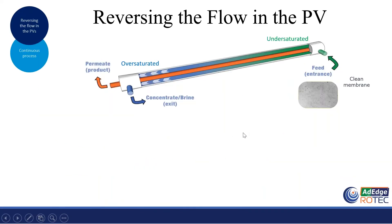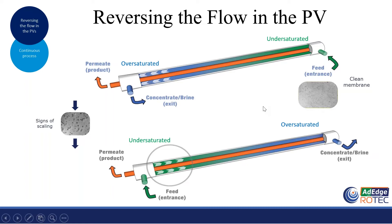In a conventional pressure vessel, feed water flows from right to left — from the green part to the blue part. Then, prior to the induction time — when we start seeing signs of scaling — we reverse the flow in the exact same conventional pressure vessel. Now the feed water flows from left to right, from green to blue again. But the area that was previously circled — where concentration was building — is now rinsed by an under-saturated solution, which removes the scale if it ever formed.